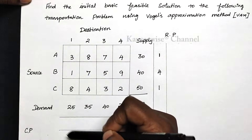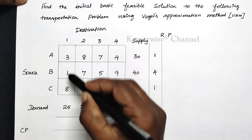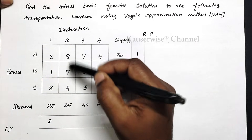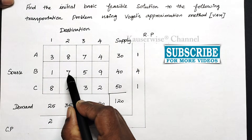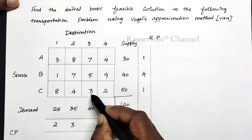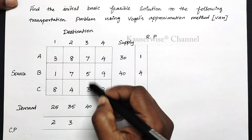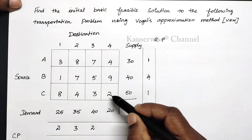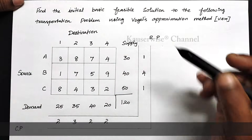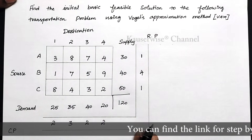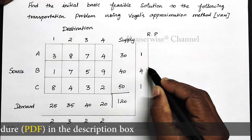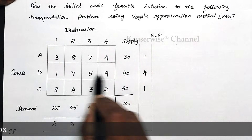Now find column penalties. First column: least value 1, next least 3, difference 2. Second column: least value 4, next least 7, difference 3. Third column: least value 3, next least 5, difference 2. Fourth column: least value 2, next value 4, difference 2. After finding row and column penalties, the next step is to select the highest penalty. Here, 4 is the highest penalty, representing the second row.